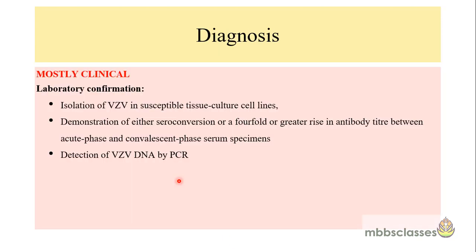Diagnosis of the disease is mainly clinical but can be supplemented by laboratory confirmation. The varicella zoster virus can be isolated in tissue cell culture. There will be seroconversion and a positive rise in antibody titer when comparing acute phase and convalescent phase. Another test is detection of varicella zoster virus DNA by polymerase chain reaction, also called PCR.